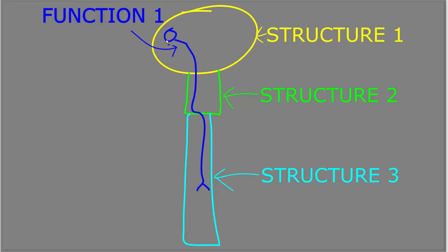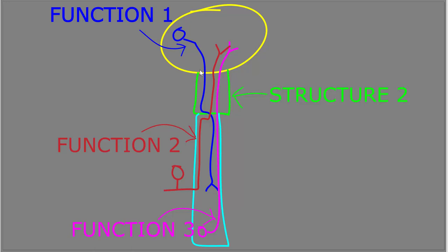So this pathway carrying information for function one passes through all three structures, structure one, structure two, and structure three. So if a patient complained of a symptom related to this function, suggesting dysfunction in this pathway, there could be a lesion of this pathway in any of these three structures, and you would need more information to know where along this pathway or which structure is affected by the lesion.